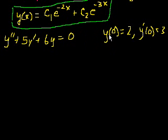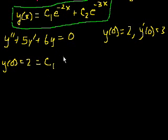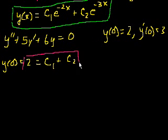Let's use the first initial condition: y of 0 is equal to 2. Substituting 0 into the general solution, we get c1 times e to the minus 2 times 0, which is e to the 0, so that's just 1 — giving us c1. Plus c2 times e to the minus 3 times 0, which is also 1, giving us c2. So our first equation is c1 plus c2 equals 2.